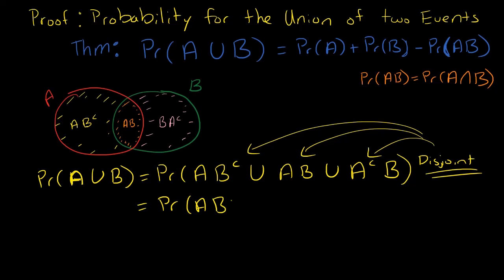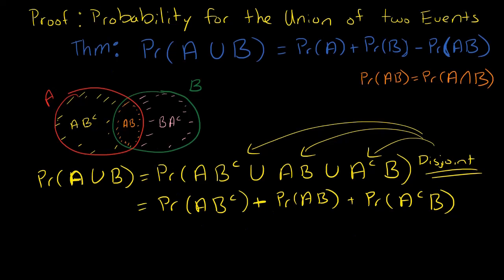So this becomes the probability of A∩B^c, plus the probability of A∩B, plus the probability of A^c∩B. Everything in yellow is A∩B^c, everything in orange is A∩B, and everything in pink is A^c∩B. No elements are shared between these three different events — so they're disjoint events. This is what the probability of A union B equals.